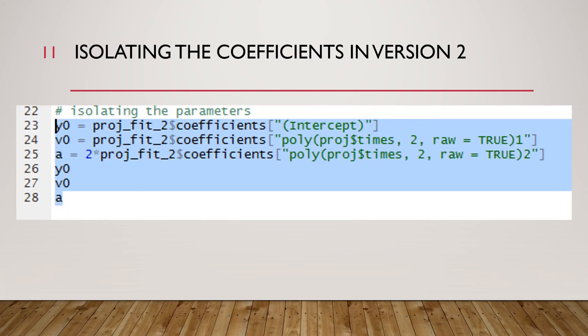We can extract our coefficients from the fit the same way we did before. That's shown here in lines 23, 24, and 25. Now with the poly method the names of those components of the coefficients vector are more cumbersome but you're going to copy and paste them so it doesn't really matter if they're cumbersome. It's pretty much the same method as before and we can extract these parameters and we get the same values as before.